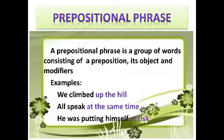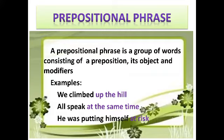Next, we have a prepositional phrase. A prepositional phrase is a group of words consisting of a preposition, its objects, and modifiers. For example: we climbed up the hill. All speak at the same time. He was putting himself at ease. These are all prepositional phrases shown in color.